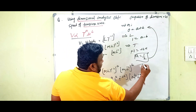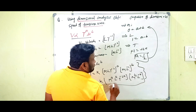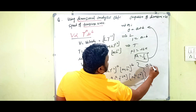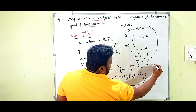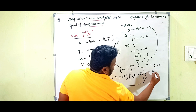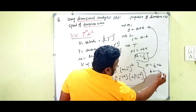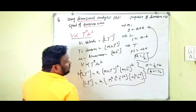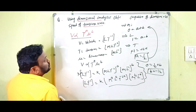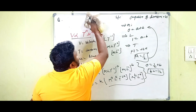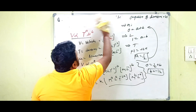Substituting a equals 1/2 into 0 equals a plus b: 0 equals 1/2 plus b, so b equals −1/2.